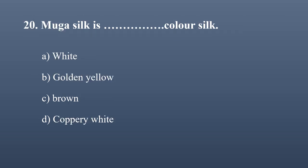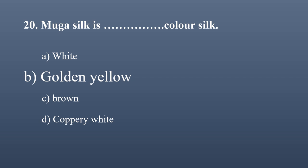Muga silk is which color? Options: white, golden yellow, brown, coppery white. Muga silk is produced in Assam, and 'muga' means yellow in Assamese. The correct option is golden yellow — Muga silk is golden yellow in color.